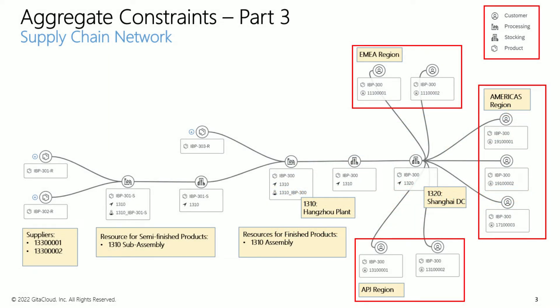Let's review the supply network of a semiconductor company for this example. This company has demands from OEM customers in all regions and an Asia-centric supply and distribution network. We have three product families: microcontrollers, microprocessors, and FPGAs.